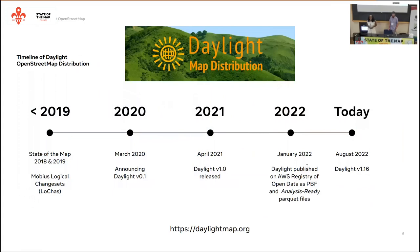Now let's talk about the history of Daylight. In 2018 and 2019, initial ideas and conversations, specifically at State of the Map, were happening around the quality of OSM data. By 2020, a sneak preview of Daylight was released. In 2021, the very first version of Daylight was released publicly. In 2022, Daylight was published on the AWS Registry of Open Data as PBF and Analysis Ready Parquet files. Currently we are at version 1.16, and version 1.17 is coming at the end of the month.